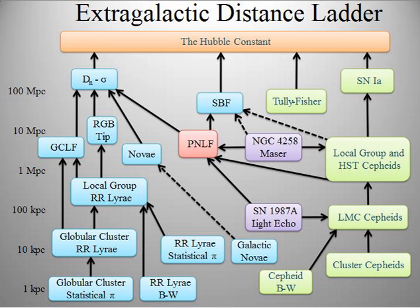Additional galactic distance indicators include Cepheids and novae, the Tully–Fisher relation, the Faber–Jackson relation, and Type Ia supernovae, which have a very well-determined maximum absolute magnitude as a function of the shape of their light curve and are useful in determining extragalactic distances up to a few hundred Mpc. A notable exception is SN2003fg, the 'Champagne supernova', a Type Ia supernova of unusual nature. Also used are redshifts and Hubble's law.